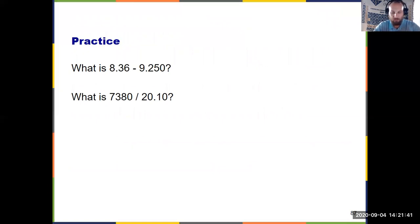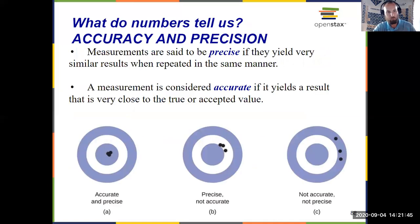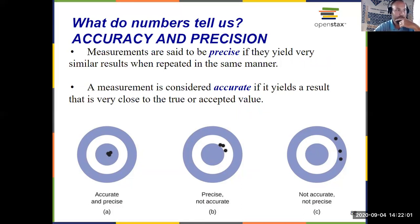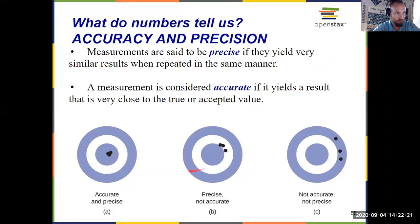We finish by talking about the difference between accuracy and precision. Precision means getting the same answer over and over again, even if it's not the true value. Using a bullseye analogy: shots that are all clustered together are precise — but if they're not near the center, they're not accurate. Accuracy means values are close to the true value. You can have values that are less precise but more accurate if they're spread out around the bullseye.